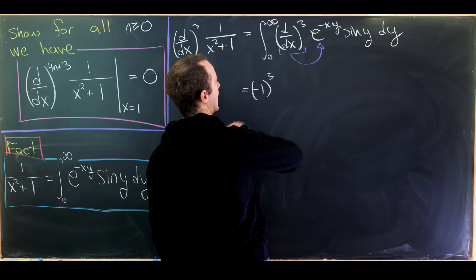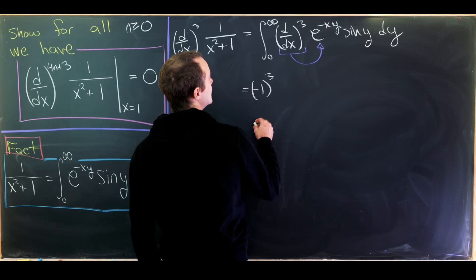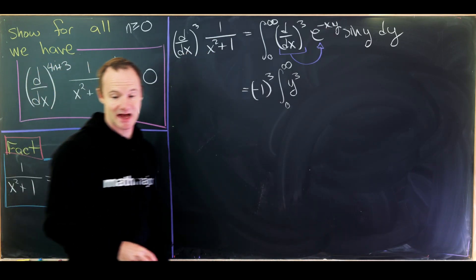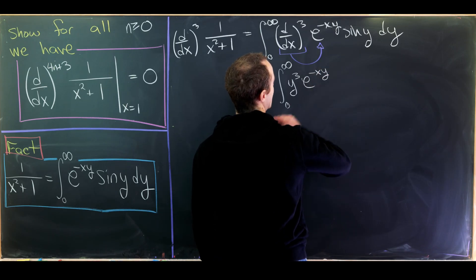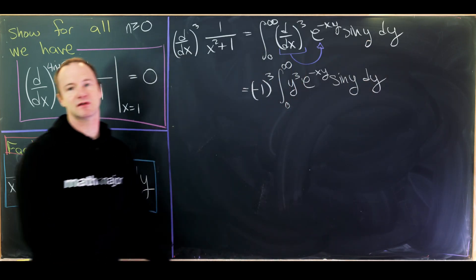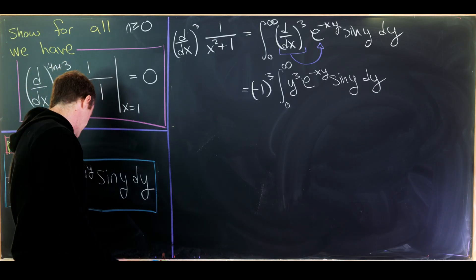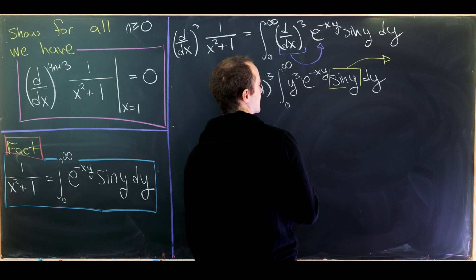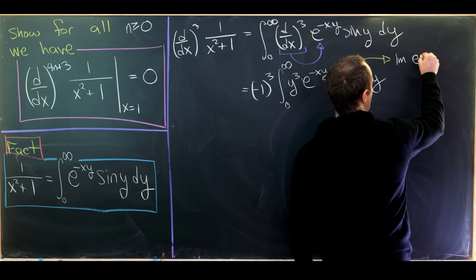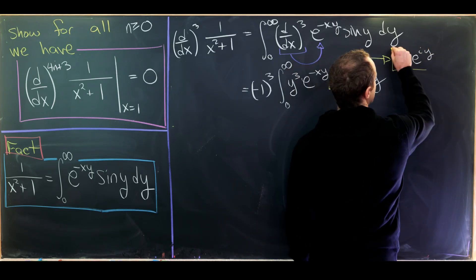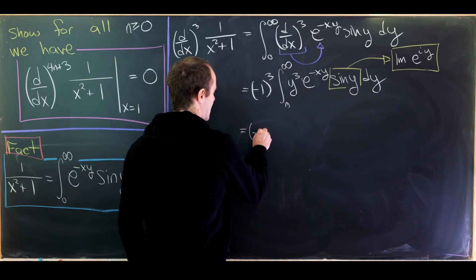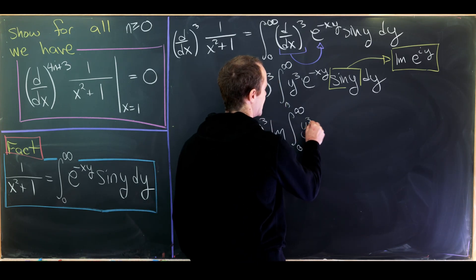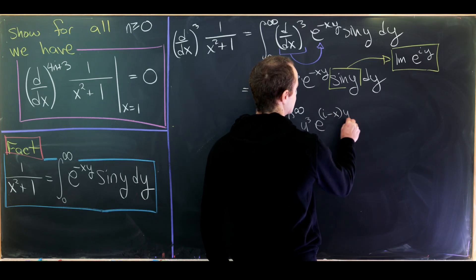Having the derivative act on e^(-xy) — the only factor containing x — gives (-1)³, since each differentiation brings down a factor of -1. We also get a factor of y from each differentiation, giving y³. So the result is (-1)³ times the integral from 0 to infinity of y³ e^(-xy) sin(y) dy. We then use the same trick as before and replace sin(y) with the imaginary part of e^(iy), obtaining (-1)³ times the imaginary part of the integral from 0 to infinity of y³ e^((i−x)y) dy.